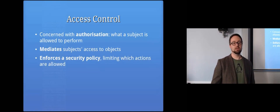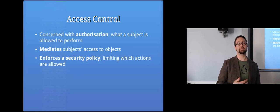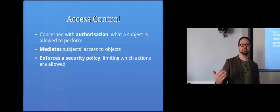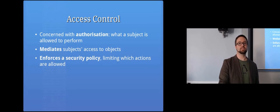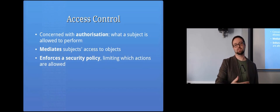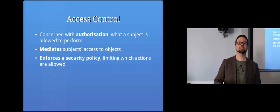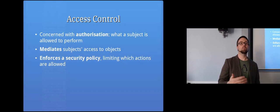Digital access controls are all about authorization — what a subject is allowed to perform. To do that, we need to have already completed authentication: knowing someone is who they say they are. Once you know that, you can enforce access controls. For example, Chris tries to enter a room, shows his badge, you verify the photo, he's authenticated. Then you check the list of people allowed in the room — that's the authorization step.